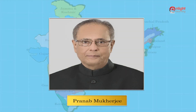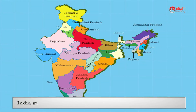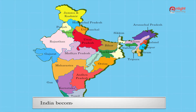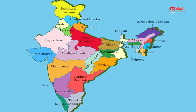Sri Pranab Mukherjee is the president of our country. Sriman Mohan Singh is the Prime Minister of India. India got its freedom from the British on 15th of August 1947. India became a Republic on 26th January 1950, the day our Constitution was enacted. India is a democratic country.